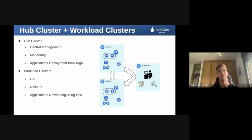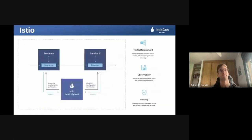Here we have our three-cluster architecture: the hub cluster and the two workload clusters. From the hub cluster we have central management, monitoring, and application deployment via Argo CD multi-cluster. In the workload clusters, installed in different availability zones for high availability, we deploy Argo Rollouts and Istio for all application networking. The key point is Istio, which provides all traffic management — both multi-cluster east-west and north-south — along with all observability metrics and an extra security layer.